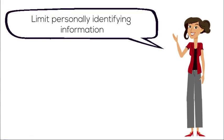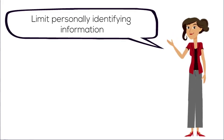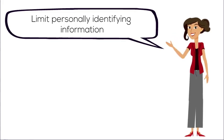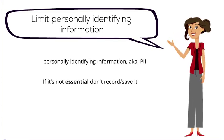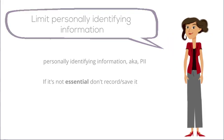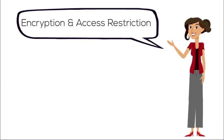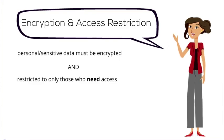Every member of the research team has a duty to safeguard personal and sensitive data at every stage of the project. The key to success is to limit the personally identifying information that is collected. If it is not essential for the research project, it should not be recorded or saved. The personal or sensitive information you do need to keep should be encrypted, and access to those files should be restricted to only those team members who must have access, such as the principal investigator or co-investigators.